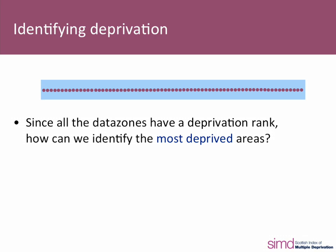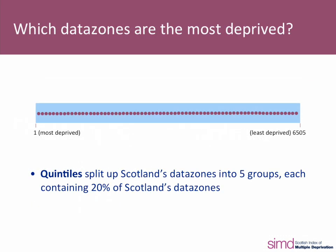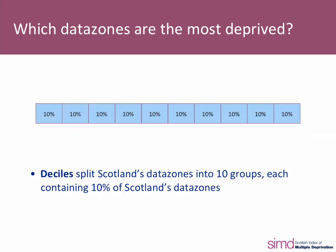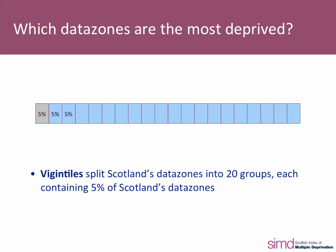So how can we define the most deprived areas? The SIMD is flexible in how users can do this, though typically it's done by using cutoffs. There are three different ones to highlight. First, quintiles — this splits Scotland's data zones into five groups, each containing 20% of Scotland's data zones. Or deciles, which go more granular by splitting into 10 groups, each containing 10% of data zones. And finally, ventiles — 20 groups, each containing 5% of Scotland's data zones.